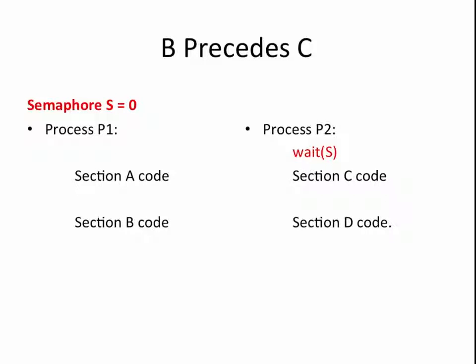P1, on the other hand, will not be constrained in this way, so section A code can begin running right away. Since section B follows section A, it will be executed after section A. Once section B completes, process P1 needs to signal our semaphore to indicate that it is now okay for process P2 to begin its execution. The signal(S) call will set S equal to 1, which will allow P2 to finally move beyond the wait(S) command.